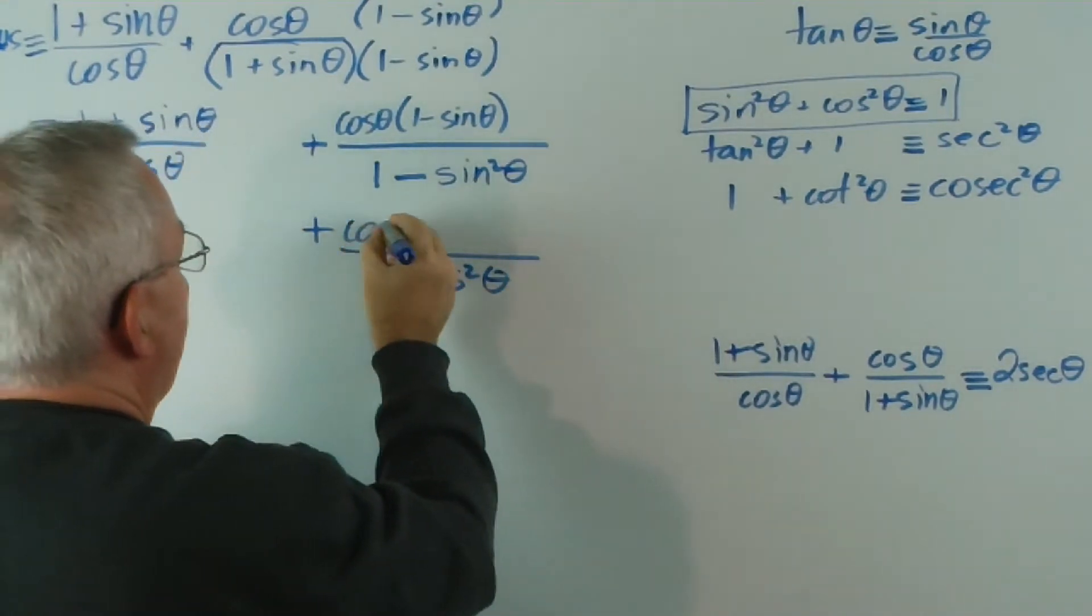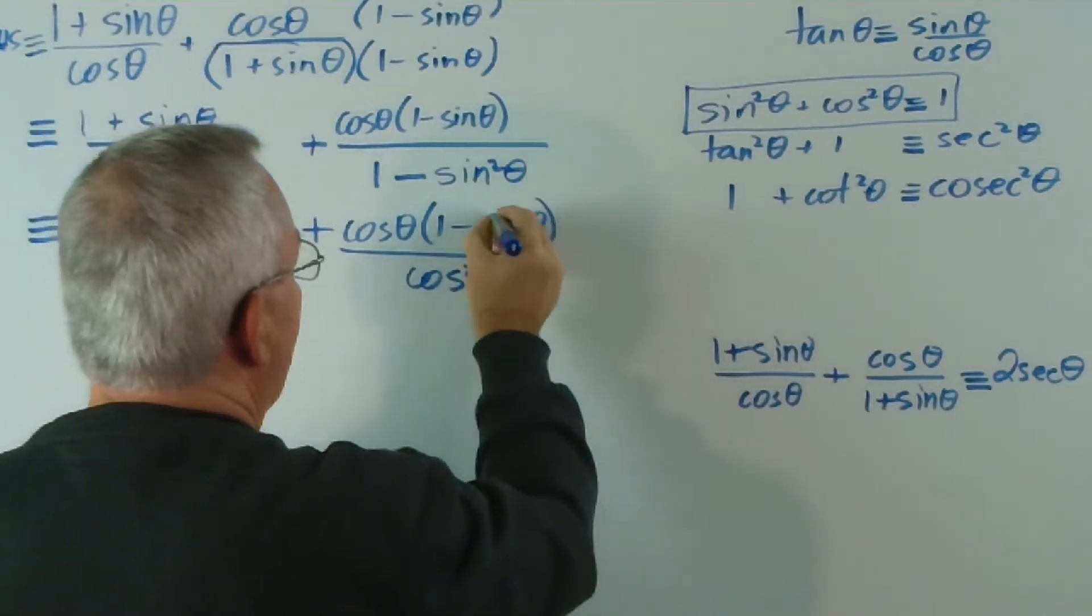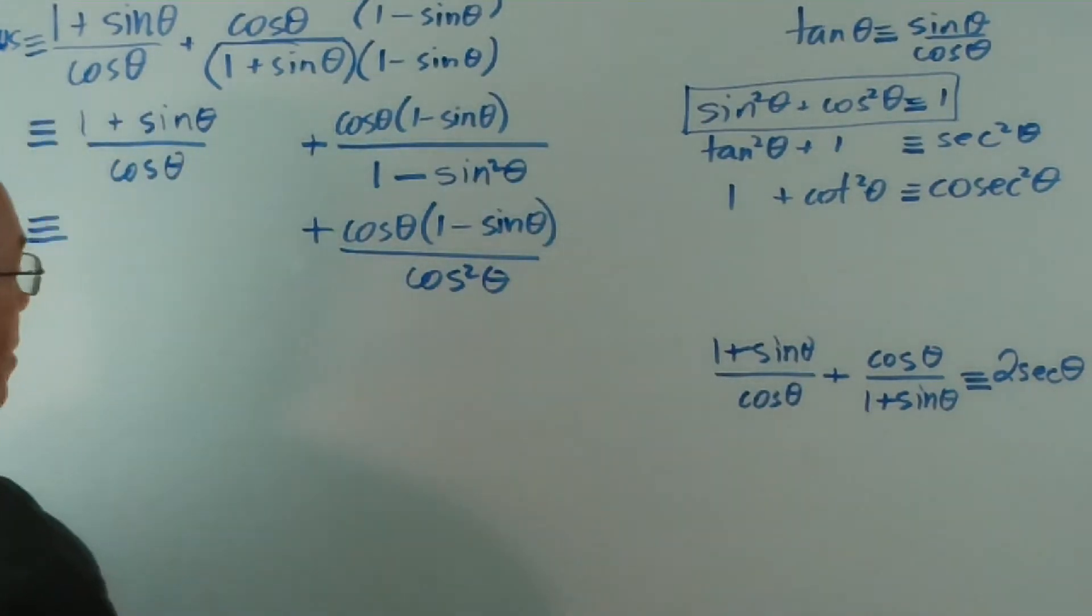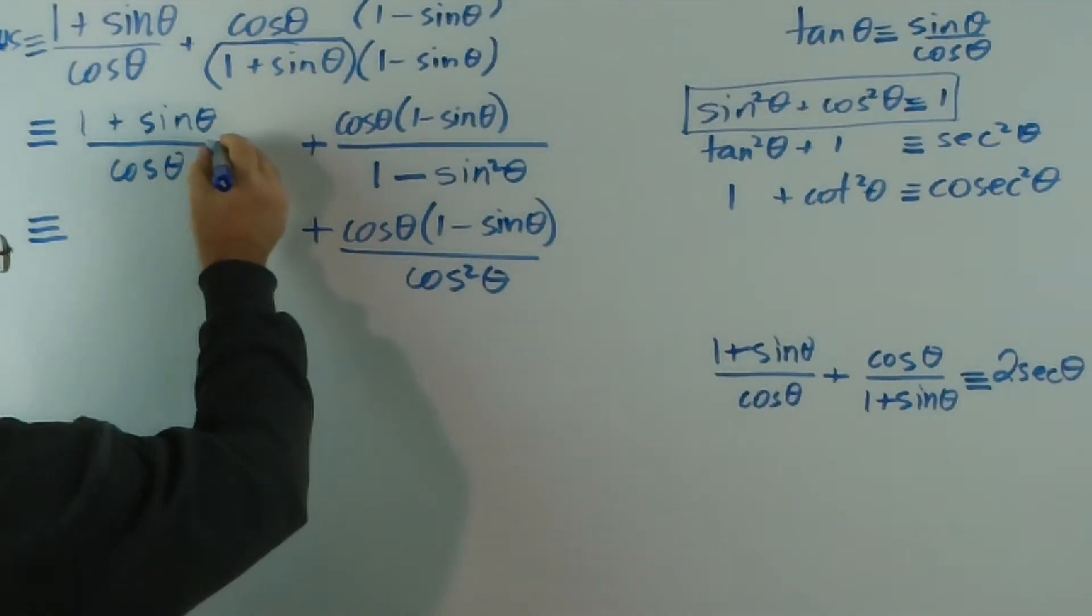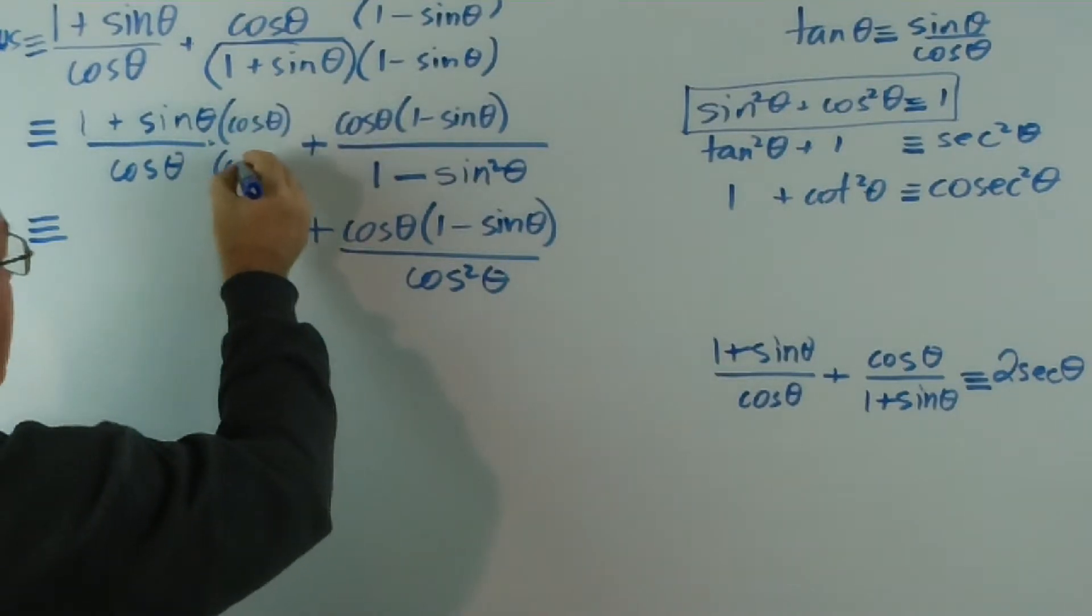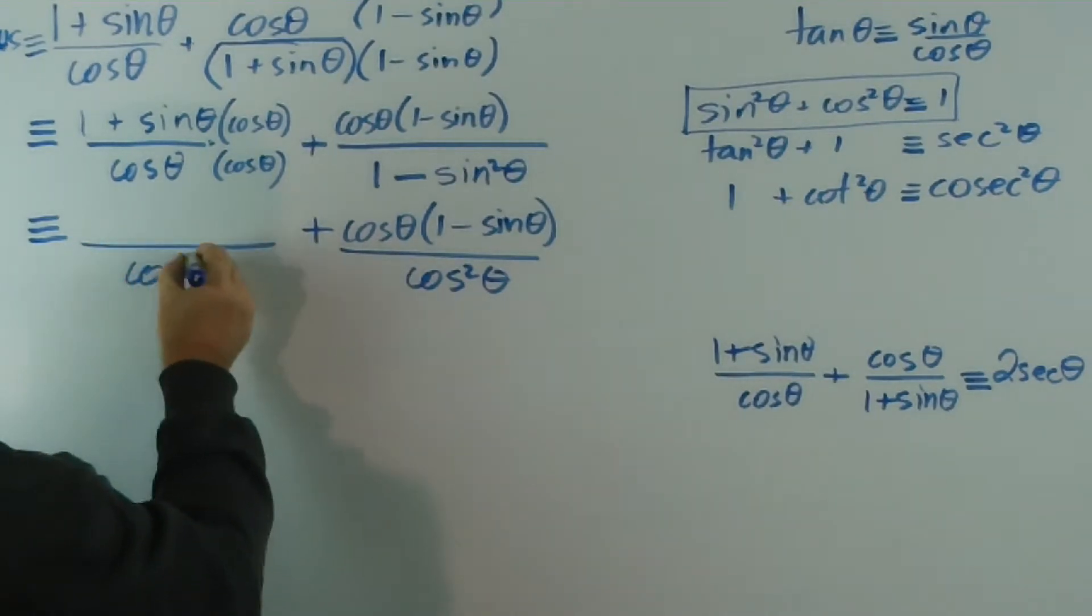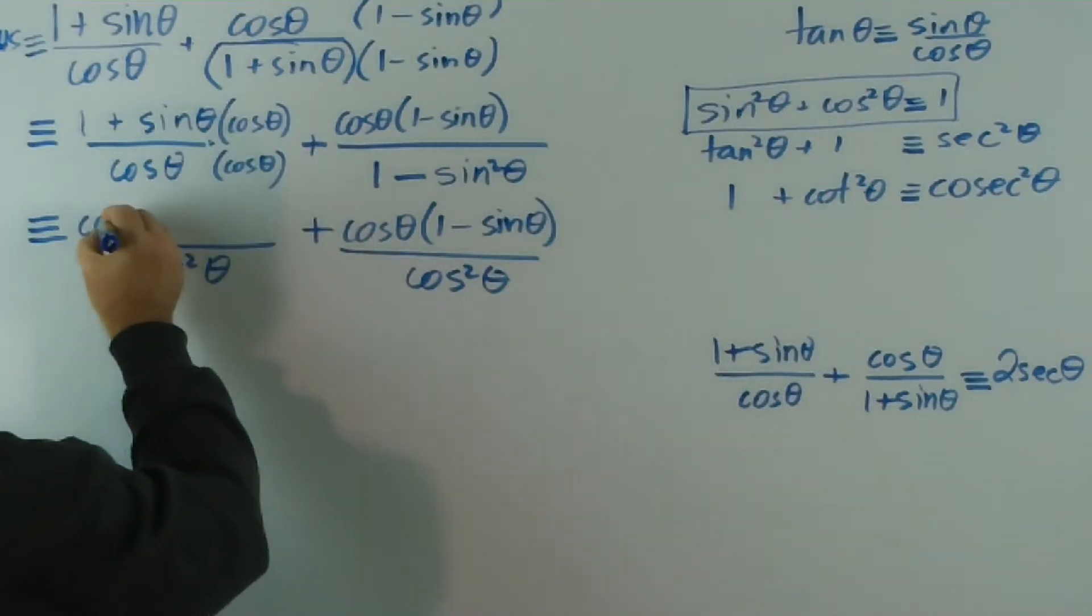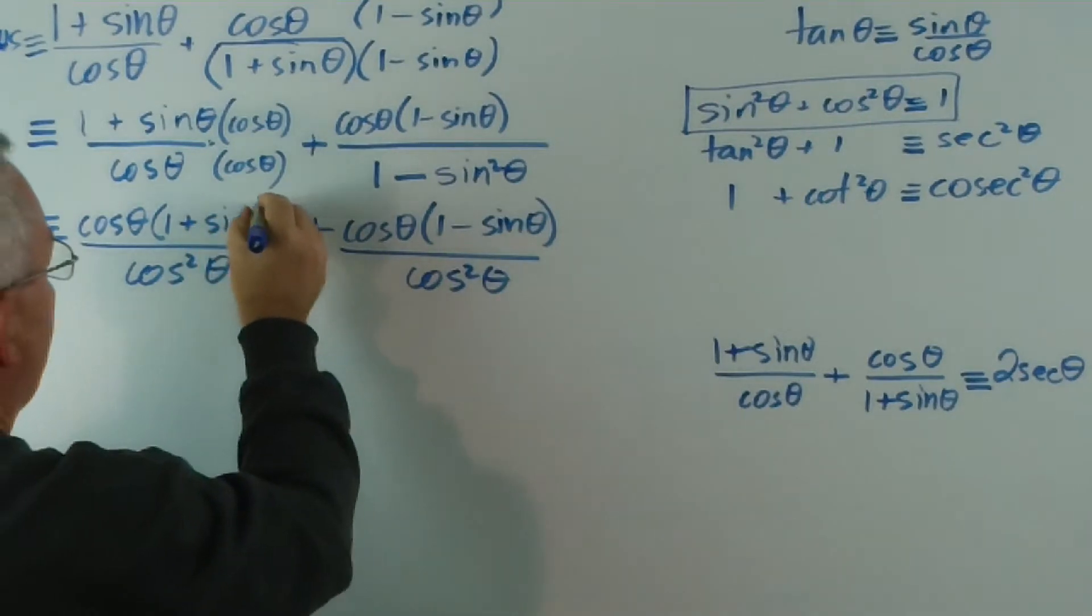I'll leave the top alone. I'm not going to rush these things. We'll deal with one issue at the moment. The issue at the moment is getting the denominators the same. How do I make that into cos squared theta? Well, that is easy, isn't it? I can multiply by cos theta over cos theta. And I get cos squared theta on the bottom and I get cos theta times 1 plus sine theta on the top.